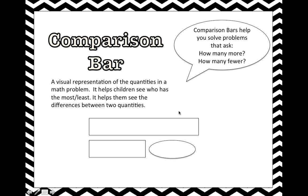This is a comparison bar. A comparison bar has two bars — one is long and one is short. It also has an oval or a circle, and this is where we write how many more or how many fewer. It's important to label comparison bars and to write their quantities inside so that students can see if they should add or subtract.